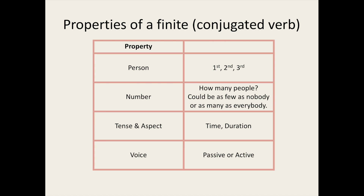For example, 'nobody is home.' 'Is,' the verb in this sentence, is the singular third person present tense of 'to be.' We also have tense and aspect, which are related to time, and which I will talk about a bit more later on. And lastly, we have voice, which describes the agent or actor in a given situation.